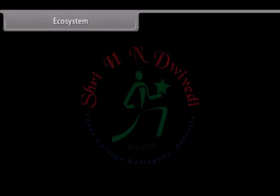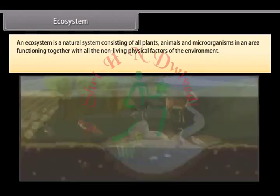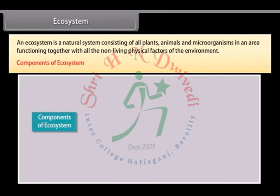An ecosystem is a natural system consisting of all plants, animals and microorganisms in an area functioning together with all the non-living physical factors of the environment. An ecosystem comprises the following two components.